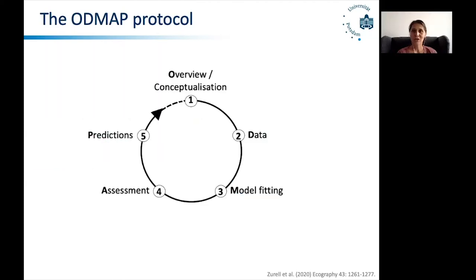The OTMAT protocol basically follows the main steps of ecological niche model building. First, the conceptualization phase, which provides the overview of what you're going to do in your modeling exercise. Then the second phase, data preparation and data processing. Third, the model fitting process. Fourth, the assessment of the model and evaluation. And fifth, the prediction in space and time. You will actually see that the initial letters of these five model building steps make up the name OTMAT.